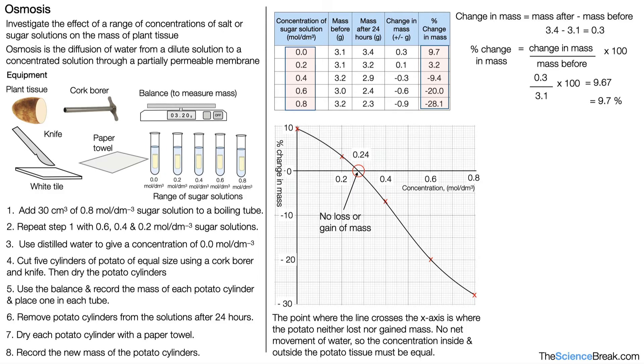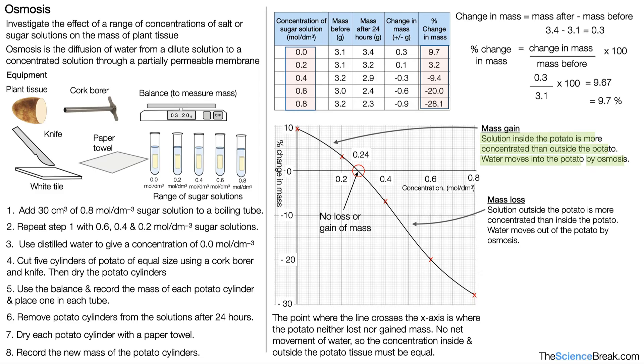In our graph here it's 0.24 mol/dm³. This section here where we have a positive change in mass is because the solution inside the potato is more concentrated than outside, and therefore water moves into the potato by osmosis. For this region here where there is a loss of mass, everything after 0.24, the solution outside the potato is more concentrated than inside the potato, and that means water moves out of the potato by osmosis.